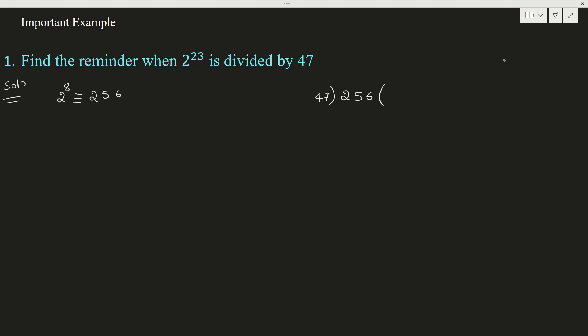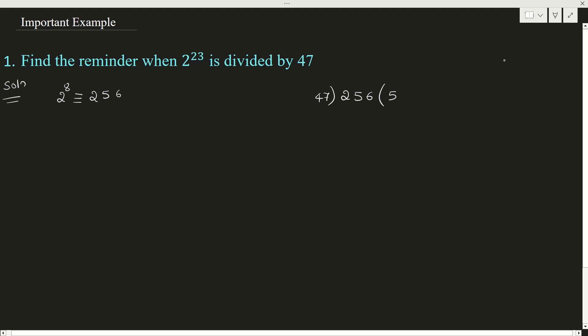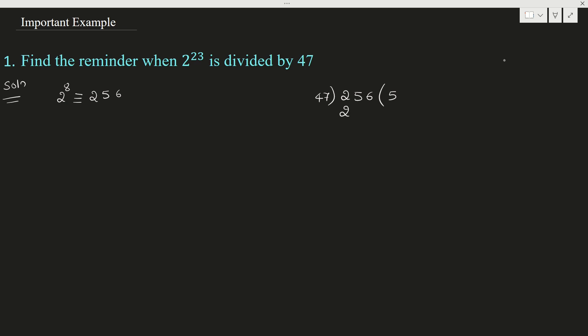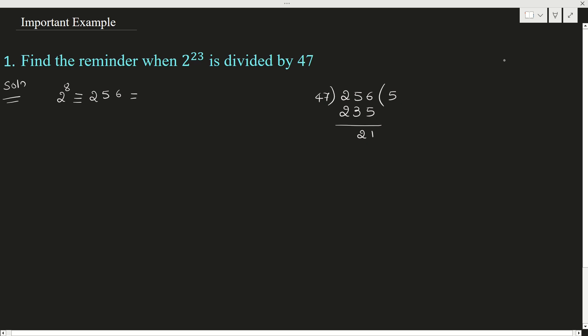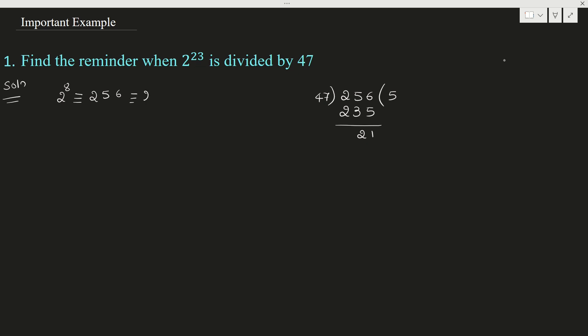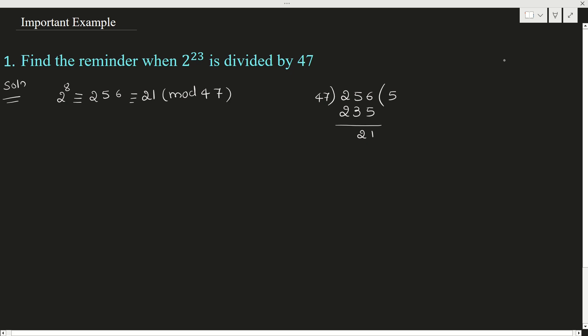We check by inspection method: 47 times 5 is 235. So the remainder is 21. We can write: 2 raised to 8, when divided by 47, is congruent to 21 mod 47. So the remainder left is 21.